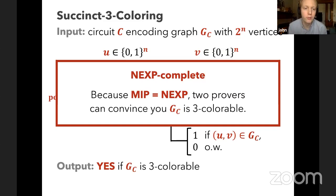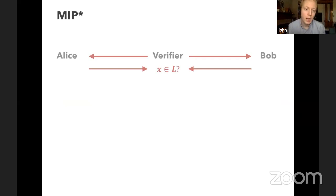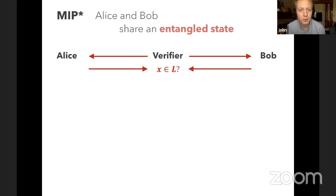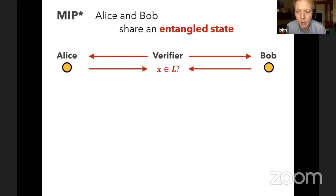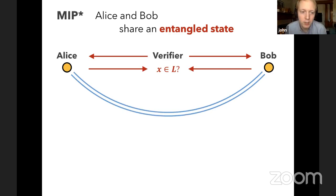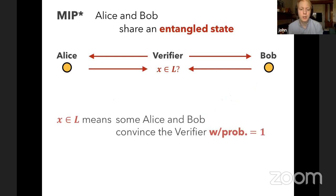That's MIP. Now MIP* is just the quantum analog of MIP — it's the case where Alice and Bob are allowed to share an entangled state. I'll use little yellow dots to represent Alice and Bob's share of the entangled state. These states are allowed to be entangled, with quantum correlations between them, but as we've seen, this still does not allow them to communicate with each other.